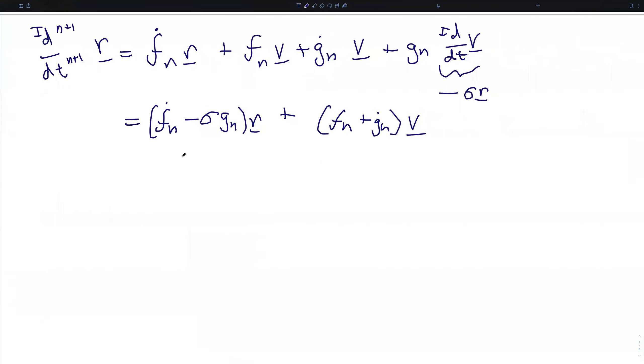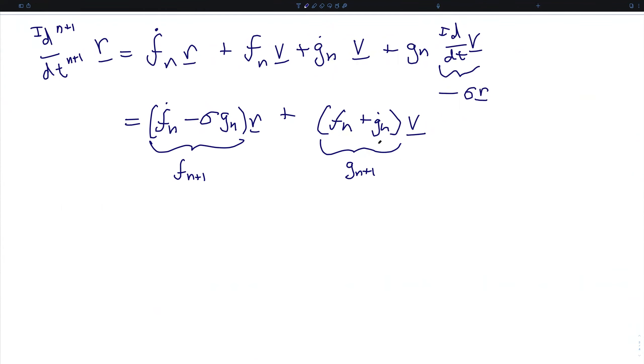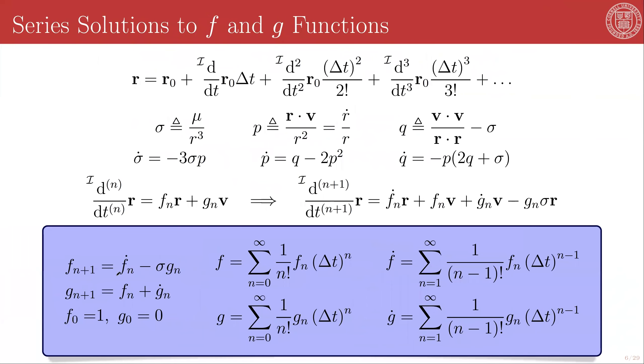So, a very cool thing has happened here, because we can now define this as the next iterant of f n. Call this f n plus one, and similarly, we can define this as the next iterant of g, call it g n plus one. Which means that if we are able to start off with an initial value for f and g, we can propagate this series solution via these very, very simple iterants, as shown here. So, f of n plus one is f dot n minus sigma g n, and g of n plus one is f n plus g dot n. How do you initialize this?